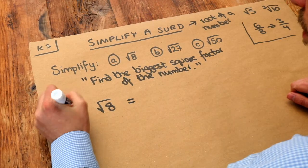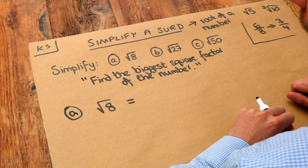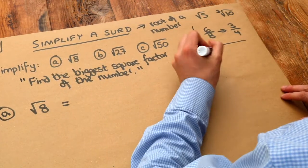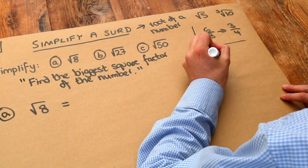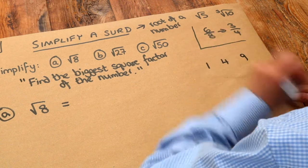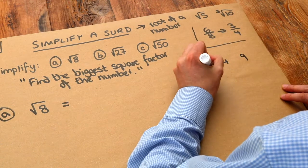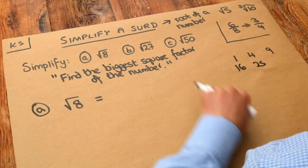What's the biggest square number that's a factor of 8? Well, let's write down our square numbers. 1 squared is 1, 2 squared is 4, 3 squared is 9, 4 squared is 16, 5 squared is 25, and that will probably do for these examples.